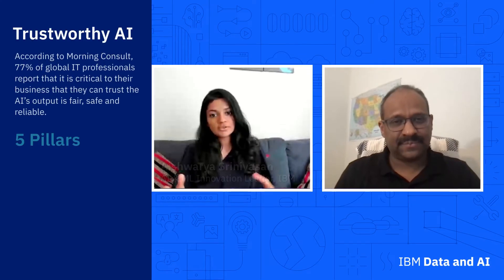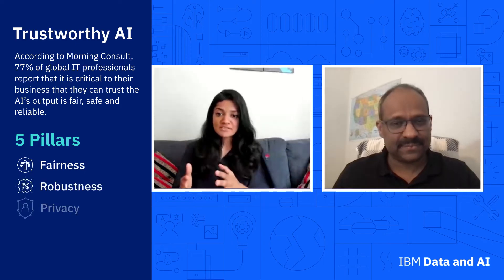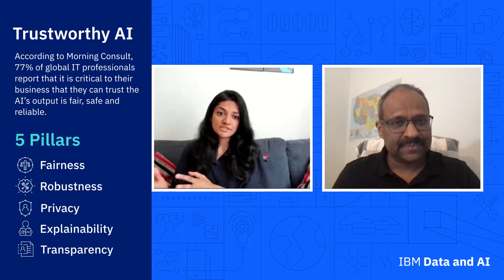So when we're talking about trustworthy AI, we hear about these five pillars: fairness, robustness, privacy, explainability, and transparency.